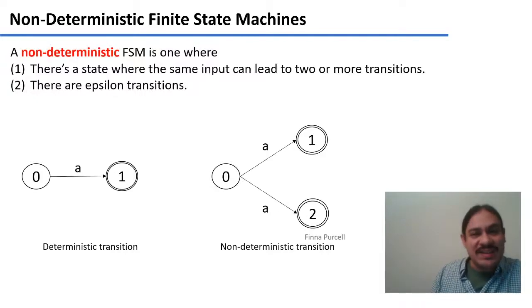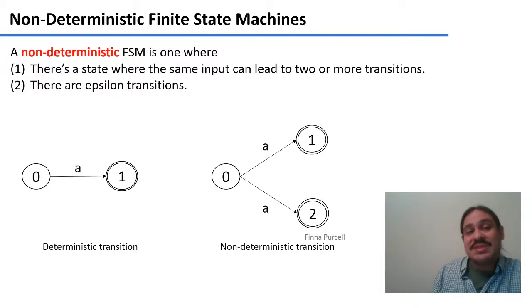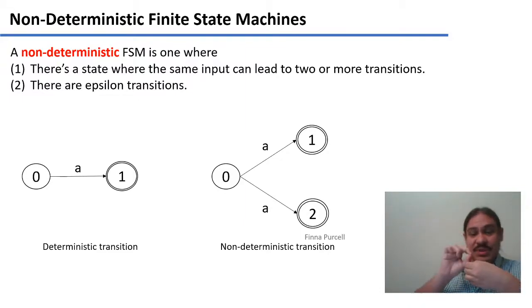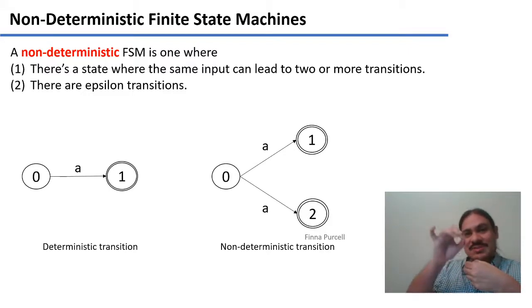In effect, one characteristic of non-deterministic finite state machines is that there can be a state where, if you get an input, there are more than one transition that uses that input.